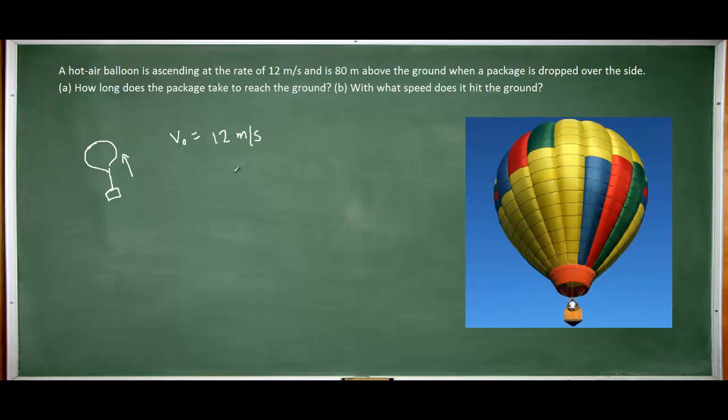A lot of times when something is dropped in a physics problem, we say the initial velocity is zero. But in this case, the package is already on its way up, so when it's dropped, its initial velocity is the same as that of the balloon. We have to make sure we put in 12 meters per second, not zero.